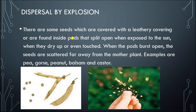These are seeds that are found inside pods that split open when exposed to the sun. When sunlight reaches the pods, they split open and burst. The seeds are then scattered far away. For example, if we see peas dry up, the pod will burst and explode.